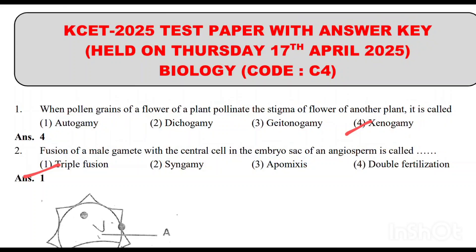Hey guys, KC2025 Biologic Key Answers. This is the C4 version, code C4 Key Answers. First question: when pollen grains of a flower of a plant pollinate the stigma of a flower of another plant, it is called Xenogamy. Option 4 is the correct answer.